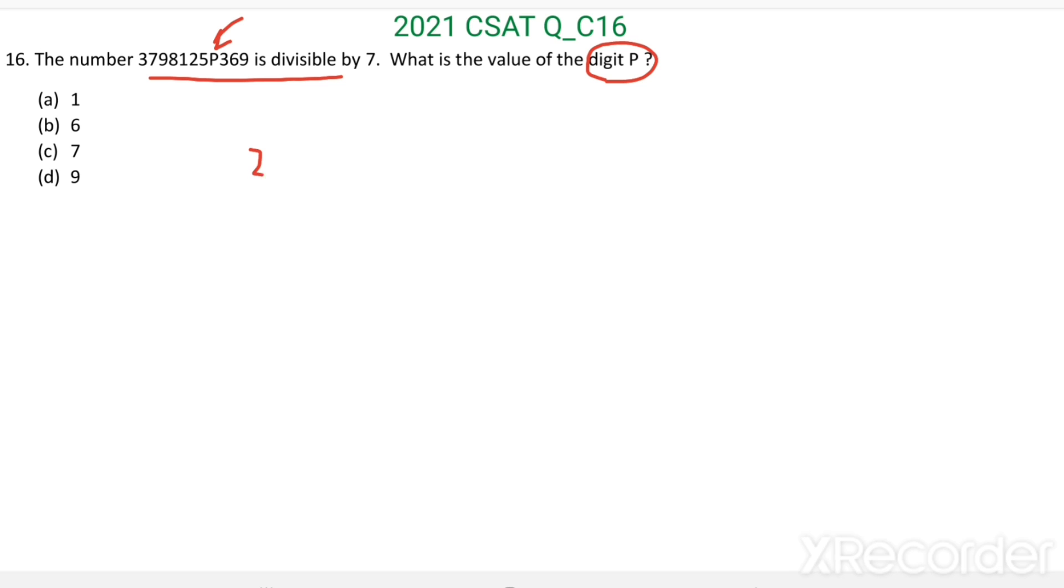When we divide this number by 7, we get 3798125P369 by 7. 5 7s are 35, 4 7s are 28.